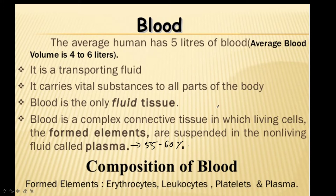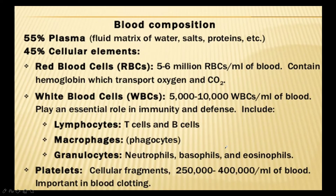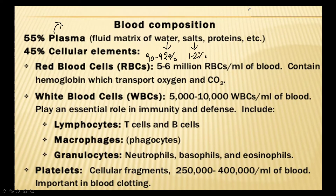Blood is the only fluid tissue in the human body. It is a complex connective tissue in which living cells — the formed elements — are suspended in a non-living fluid called plasma. Erythrocytes are RBCs, leukocytes are WBCs, and the third cellular element is platelets. Blood composition: 55 percent plasma and 45 percent cellular elements. Plasma contains 90 to 92 percent water, 1 to 2 percent salts, and 7 to 8 percent organic compounds like proteins.